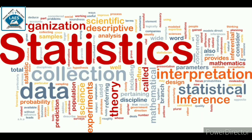So when we count population, we first do collection of data, then classify it state-wise in numbers (analysis), and finally interpret it to get the details we need. In the definition of statistics, the correct order is: first collection, then analysis, and then interpretation. Whenever you are asked for the definition, remember this proper order.